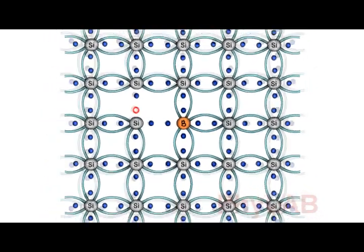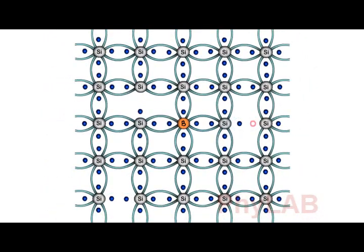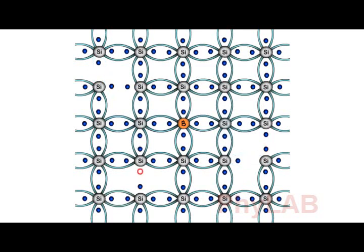And as seen previously, the immediate neighboring electron will be attracted towards the hole, thus creating another empty space in its previous location. Simultaneously, the electrons of the silicon atoms attain thermal energy and keep breaking the covalent bonds at room temperature.